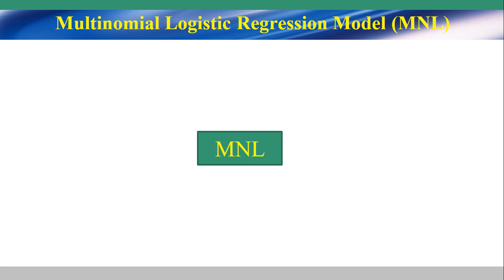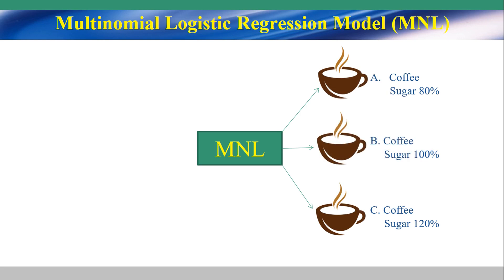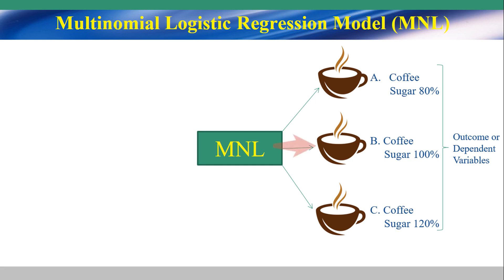In this part, I talk about an example diagram of the multinomial logistic regression model. On the right-hand side is the dependent variable, or outcome, which has three groups of coffee: group A is coffee with 80% sugar, group B is coffee with 100% sugar, and group C is coffee with 120% sugar.